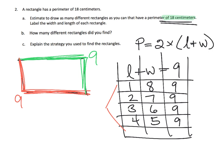So there are four different rectangles we could draw. A 1 by 8 — that's really skinny — a 2 by 7, a 3 by 6, and a 4 by 5, which is almost looking like a perfect square. Our strategy was knowing that the length plus width has to equal 9, and then finding all the combinations that equal 9.